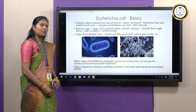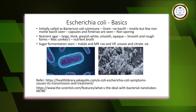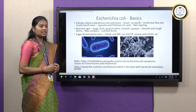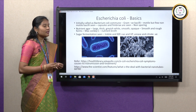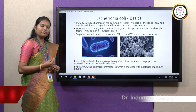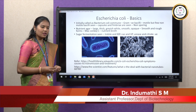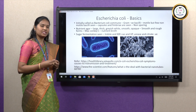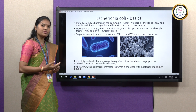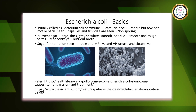Let's first look into the basics of Escherichia coli, which is in short called E. coli. This was earlier called as Bacterium coli commune. This is a gram-negative bacilli, i.e., rods in shape. They are motile with peritrichous flagella, which means flagella present all over the cells, while few are non-motile too. Capsules and fimbriae are seen. Fimbriae are short hair-like appendages present outside the cell wall. These fimbriae help the organisms to bind to the host cell receptors, and they are non-sporing, which means they do not produce any spores.